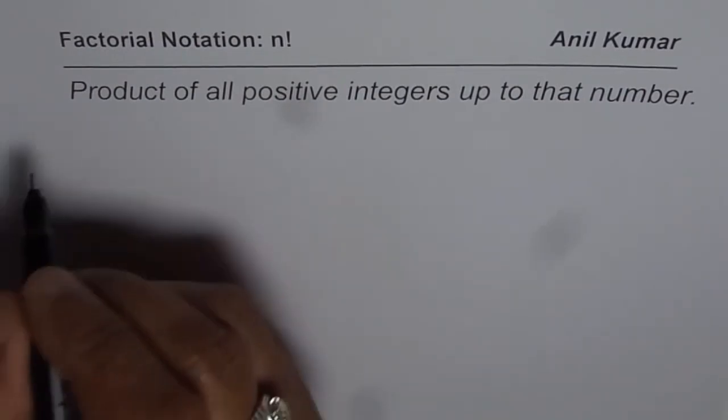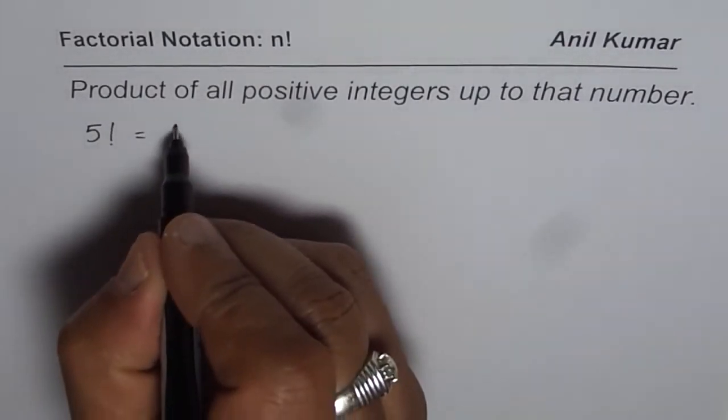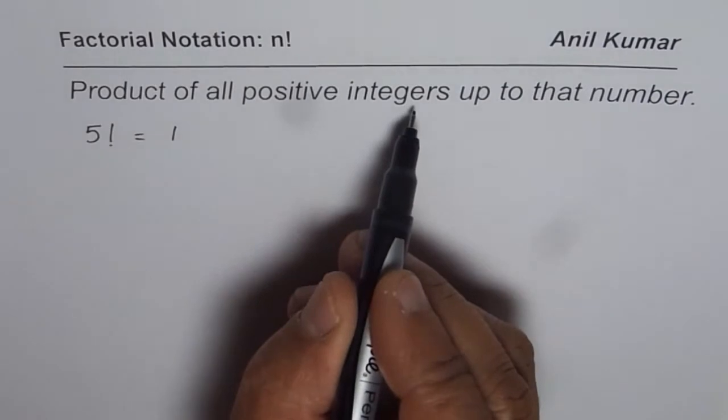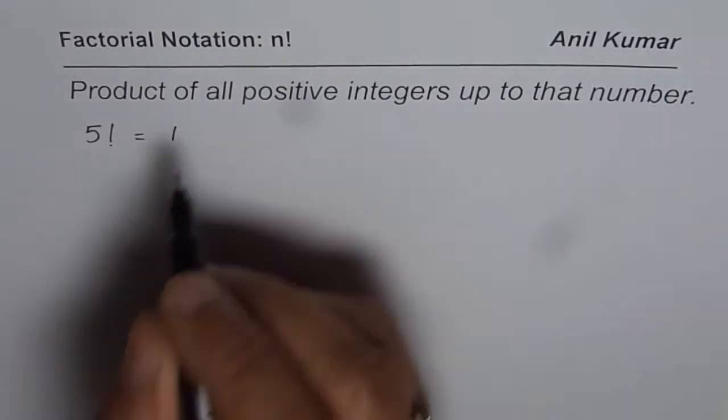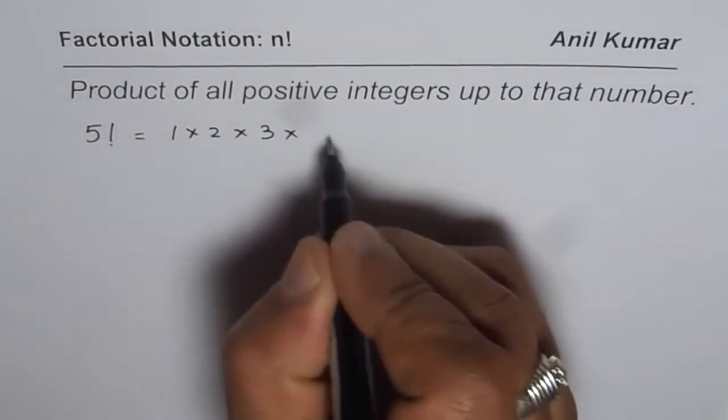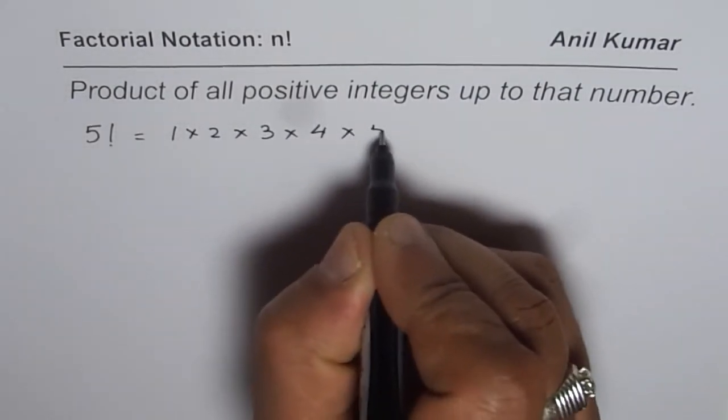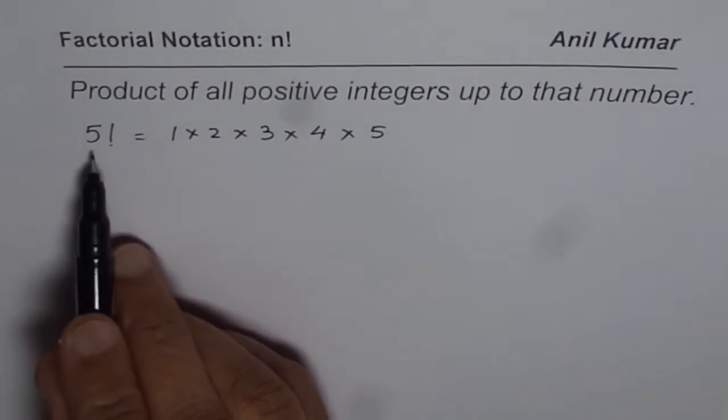For example, if I have 5 factorial, it really means you could multiply all positive integers, means from 1 onwards, to that number. So 1 times 2 times 3 times 4 times 5. That is 5 factorial. So that is how we get a short form of writing factorial.